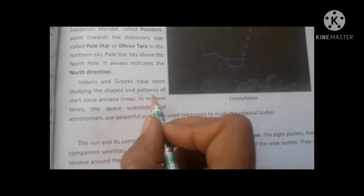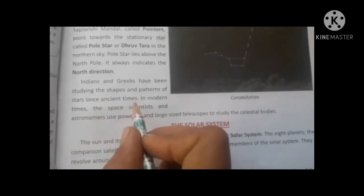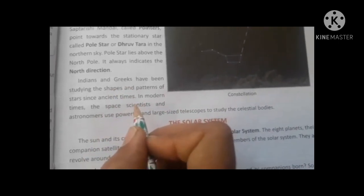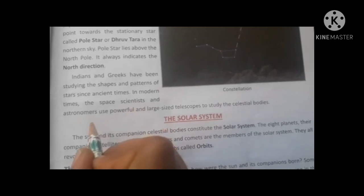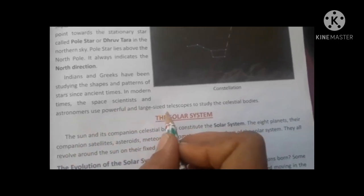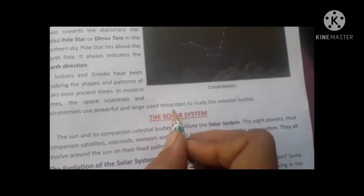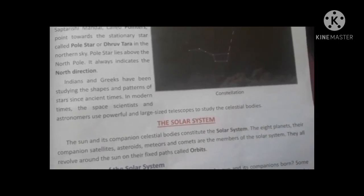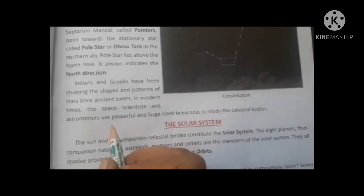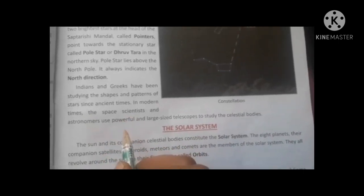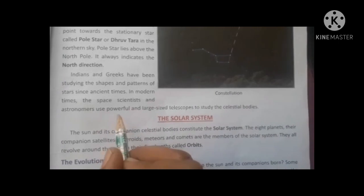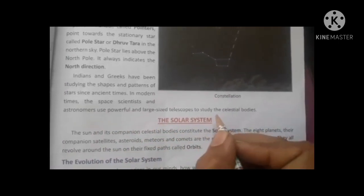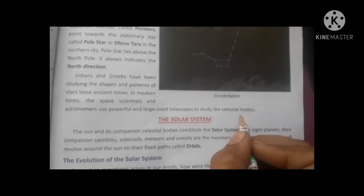Indians and Greeks have studied the shapes and patterns of stars since ancient times. In ancient times, Greek and Indian people studied these patterns. In modern times, space scientists and astronomers use powerful and large-sized telescopes to study the celestial bodies.